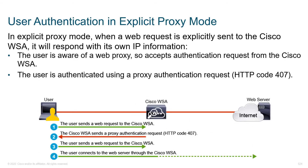When implementing proxies, they can be deployed in explicit mode or transparent mode. Transparent mode uses network wizardry — like WCCP or policy-based routing — to grab certain traffic flows and redirect them into the WSA. With explicit mode, the user's endpoint knows it's supposed to use a proxy. The user sends a web request to the proxy, the proxy responds with a 407 code, and the user has to come back and authenticate.